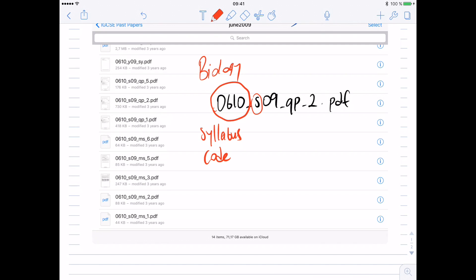And here, this S means summer. You know that examinations are carried out twice a year in May-June session, which is the summer session, or in October-November, which is the winter session. And 09 is the year of the examination. That's 2009.